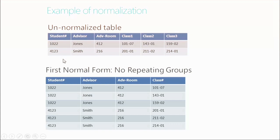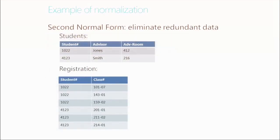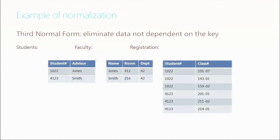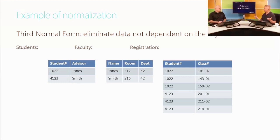That may have blown my mind a little bit. Can we go back and look at the original? Here's our original — student information, advisor information, advisor's room, and each student's schedule all in one un-normalized table. And you just took us through three levels of normalization, and we ended up with a student table, a faculty table, and a registration table. So we took that one un-normalized spreadsheet-like table and broke it up using basic principles of normalization into three discrete entities of information.